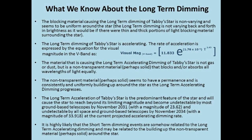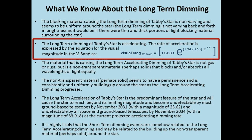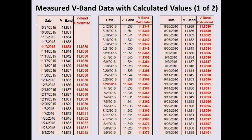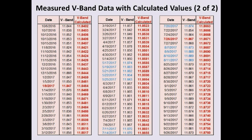For our third and last topic, this is an update on the long-term dimming of Tabby Star, since we are at the end of the month and want to update you at least once every month. We are revisiting our theory that the long-term dimming of Tabby Star is accelerating. The rate of acceleration is expressed by the equation for the visual magnitude in the V-band as shown here. This is a large table of V-band measurements taken by David Lane over an almost two-year period, broken up across two charts to fit on your screen.